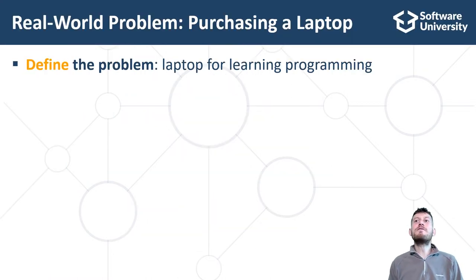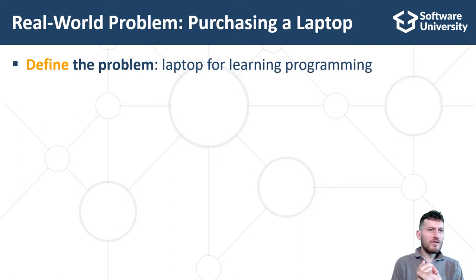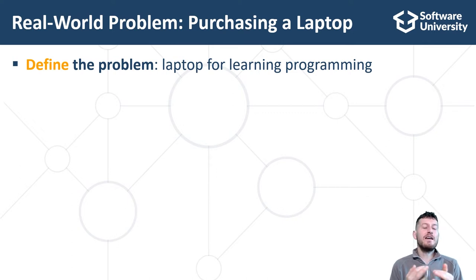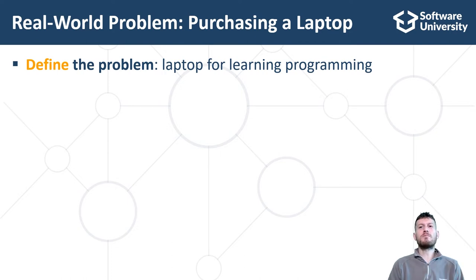Let's take an example of a real world problem: we want to buy a new laptop. To define the problem, we gather requirements — who will use this laptop and for what purpose: learning, gaming, watching movies, internet browsing? What budget do we have? From these questions we gather requirements around brand, weight, processor, memory, storage, video card, screen size, camera, microphone and other peripherals. For example, we need a laptop for learning software development with a low to medium budget.